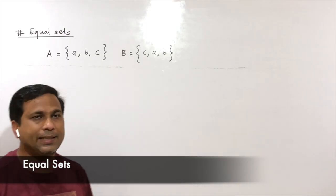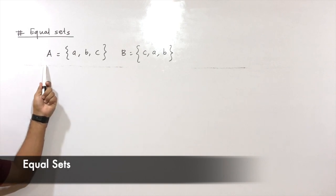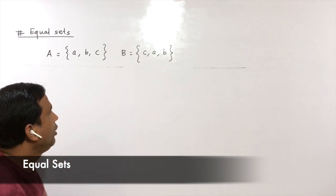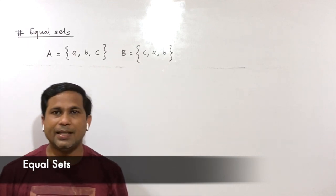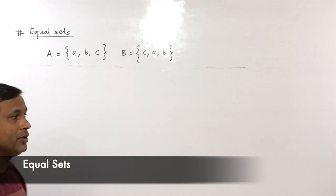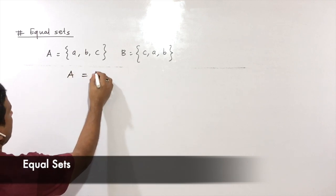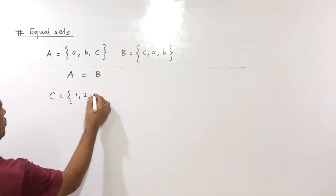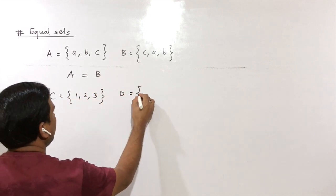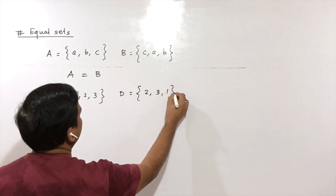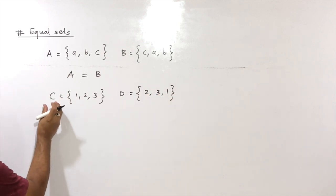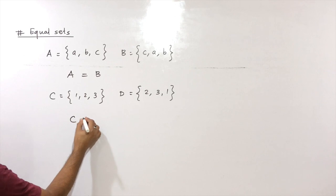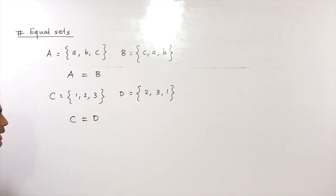Now let's see equal sets. If you observe, A is a set with elements A, B, C and D is a set with elements C, A, B. In both sets exactly the same elements are present, so you can say that set A is equal to set D. Suppose set C has elements 1, 2, 3 and set D has elements 2, 3, 1. Again the elements are exactly the same, so set C is equal to set D.